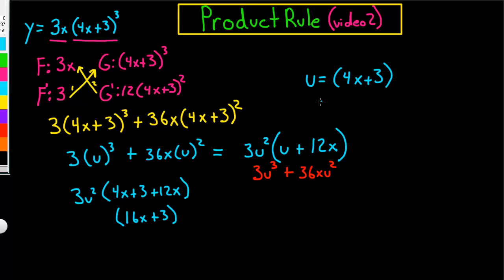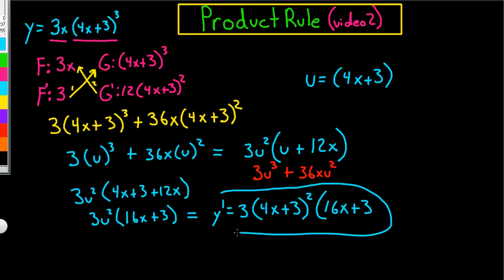Now, let's put in this 4x plus 3 times 3. So, let's finish that, 3u squared and that's going to give you 3 times 4x plus 3 squared times 16x plus 3. And that is the derivative of this function and that's how you'd write it.